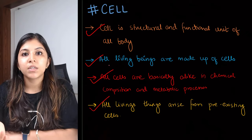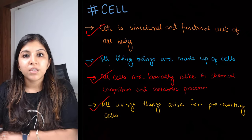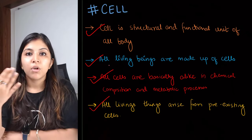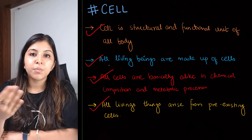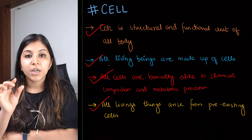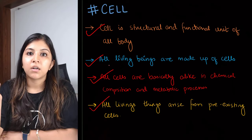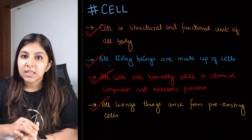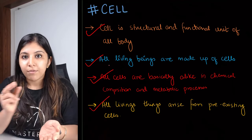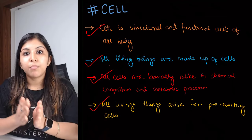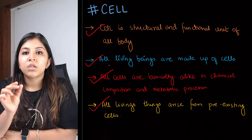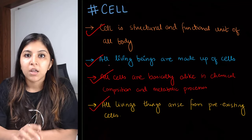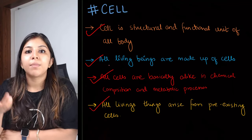Robert Hooke was a scientist who basically saw the cells in a cork. What he did was take that simple microscope, modify it, and make a compound microscope. He took a piece of cork and observed it under the microscope. What he saw was that cork is made up of many cells, and those cells looked like boxes — similar to small compartments, which in Latin are called 'cell'. This is how the term 'cell' came into the picture.